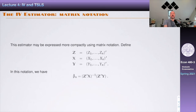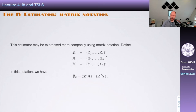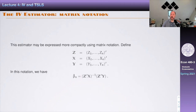The IV estimator can be expressed using matrix notation. If bold Z is the n×(l+1) matrix, bold X is the n×(k+1) matrix, and bold y is the n-dimensional vector, then the IV estimator has the representation β̂ = (Z'X)⁻¹Z'y — exactly like the least squares estimator except that instead of X, we have Z in both places.